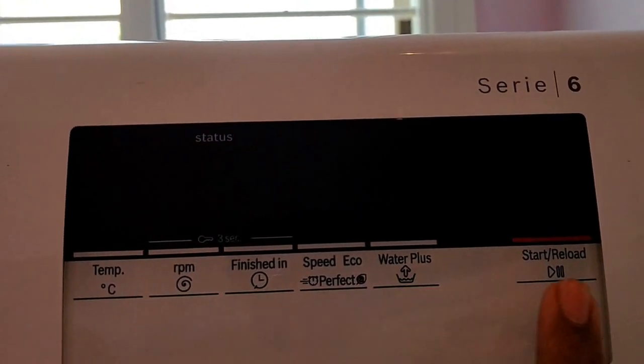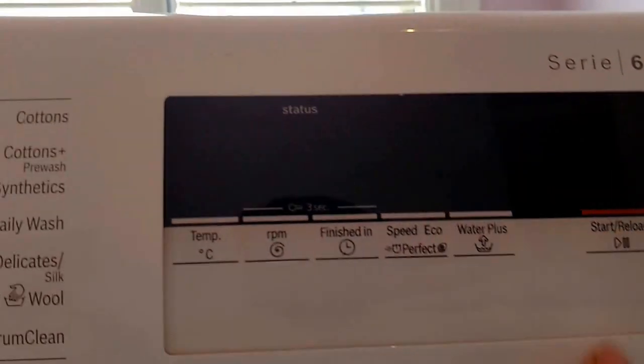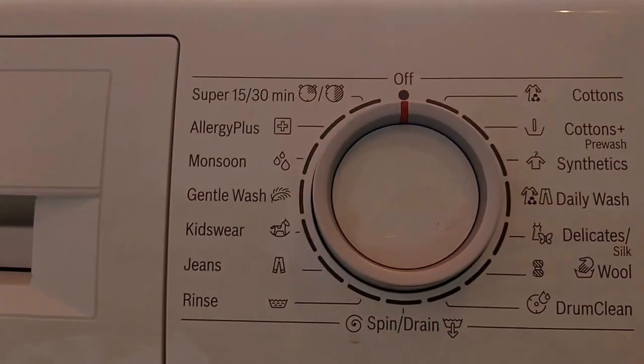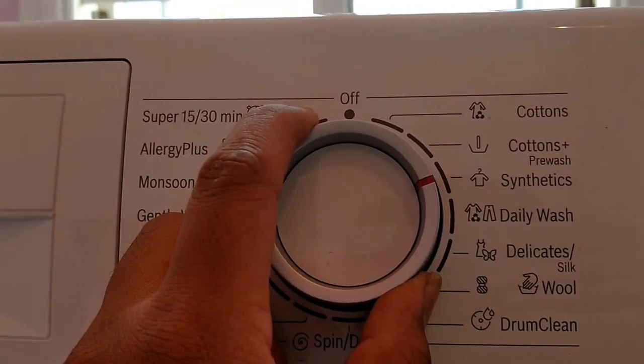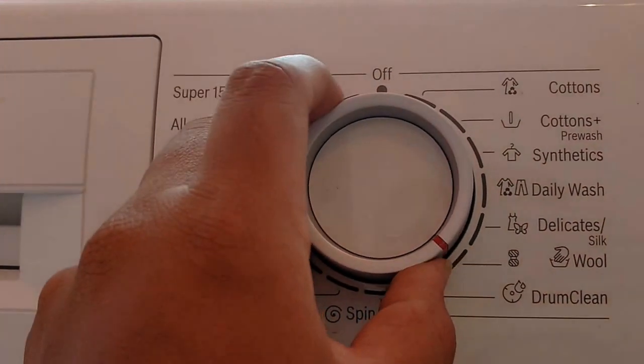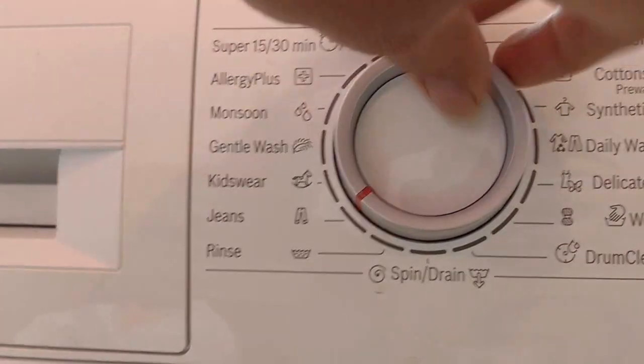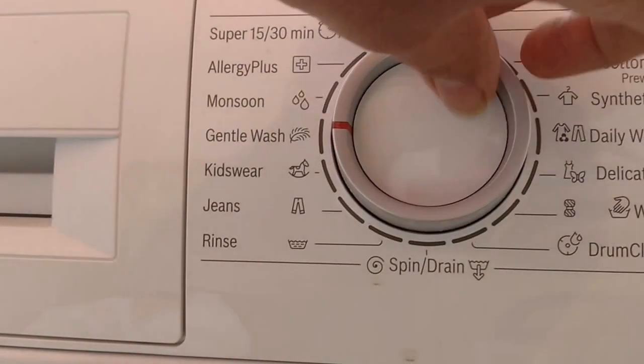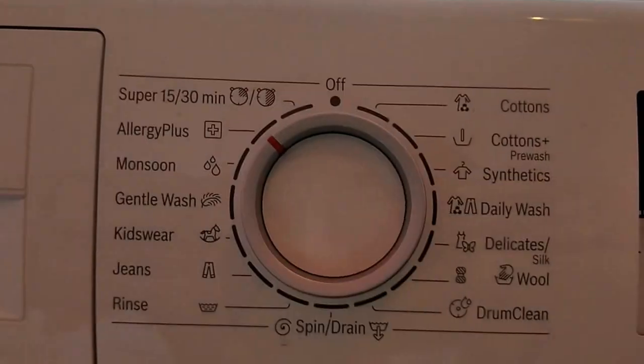You can always adjust the temperature, rpm, the timings and other options. And you want to add more water. This is button to start and stop the machine. Let's look at the options that you get. You have multiple options starting with cotton cloth wash and synthetic wash, daily wash, delicate wash, woolen wash, drum clean, spin, drying, rinse, jeans, kids wear, gentle wash, monsoon, allergy plus for medical related washes, and finally quick wash.